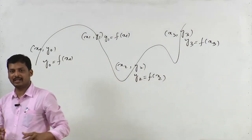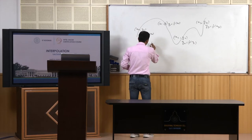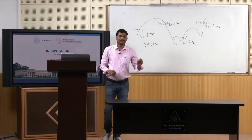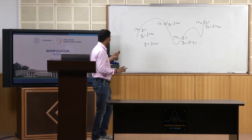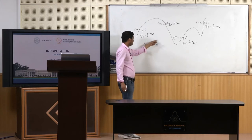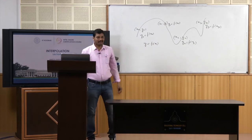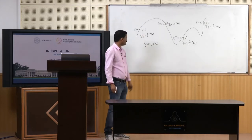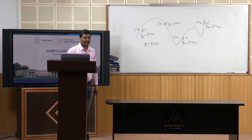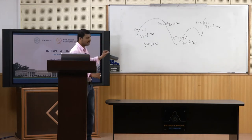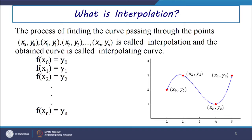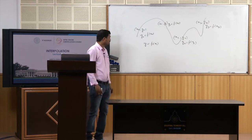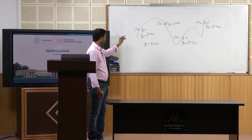If we have a function y = f(x), and particularly for this function x0, x1 up to xn are the set of tabulated or data points, then at those points exactly we can determine the functional values. So if we have functional values like y0 = f(x0), y1 = f(x1), y2 = f(x2), up to yn = f(xn), then we can connect these points through curves, and the best way to fit a curve through these points is called interpolation.